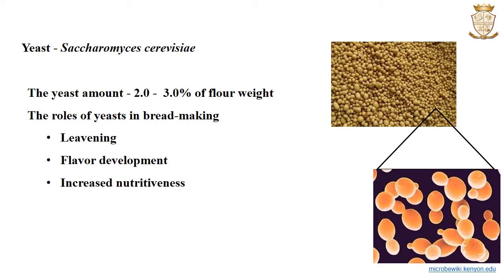The yeast used for bread making is Saccharomyces cerevisiae. The yeast should have certain ideal properties: the ability to grow rapidly at room temperature, easy dispersibility in water, ability to produce large amounts of carbon dioxide in the dough, and the ability to resist autolysis when stored at 20 degrees Celsius.